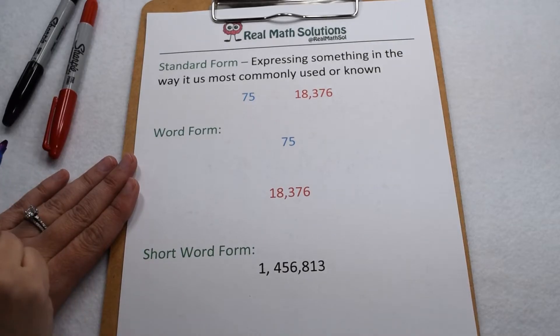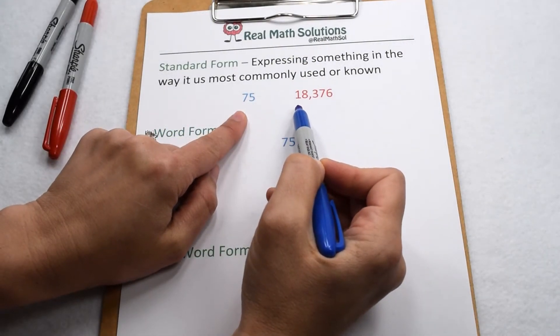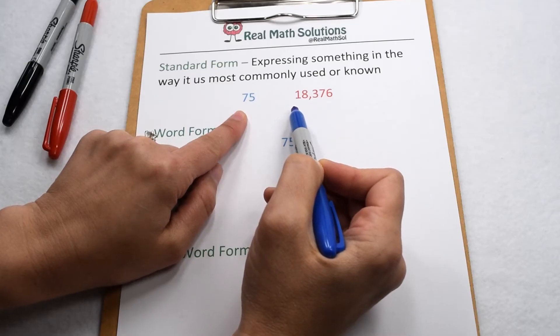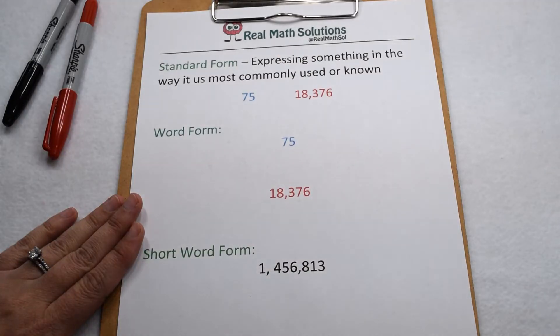When we work with numbers, we have different ways to express them. One way to express them is in standard form. Standard form is when we express something the way it's most commonly used or known. So writing numbers out like this would be expressing them in standard form.